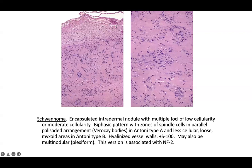For test-taking: they must show you at least some Antoni type A tissue to expect you to call it a schwannoma; type B alone is insufficient. Plexiform schwannomas have large separated fascicles at low power, similar to plexiform neurofibromas, and are associated with neurofibromatosis type 2. Remember: schwannomas are associated with NF2.